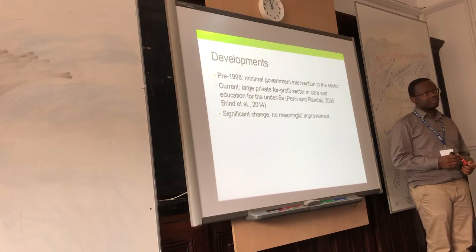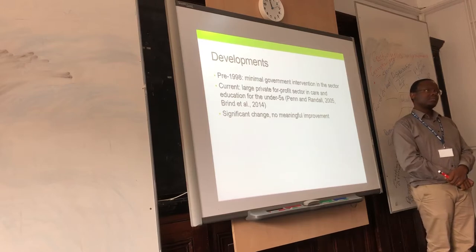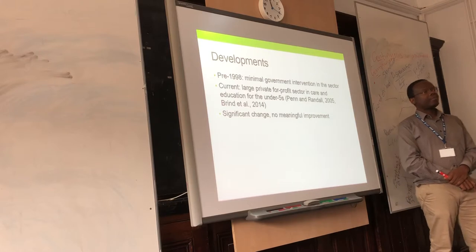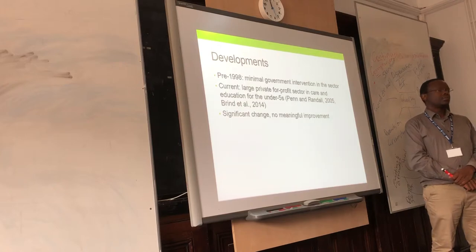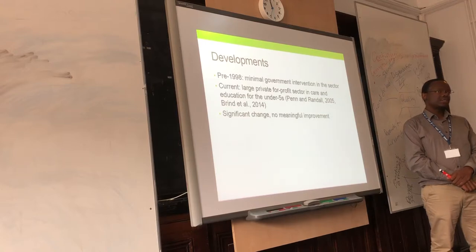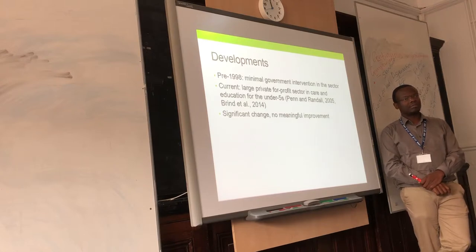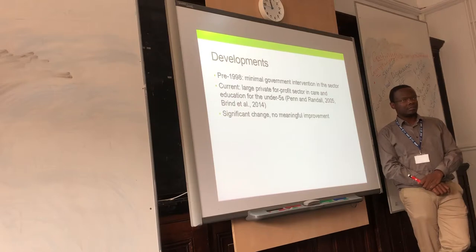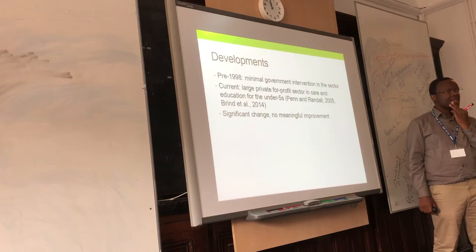It could be too standardised. A large chain of nurseries may have the same policies and procedures regardless of where they are, not accounting for the different children in different areas, or the needs of the communities they serve. If one nursery is in a more affluent area than another, the needs of the children can be different. There's also branding — a large chain carries a preconceived notion of quality, which may not necessarily be true compared to a smaller setting that perhaps has a higher Ofsted rating.